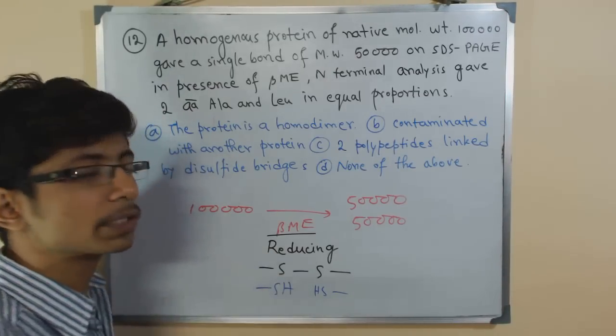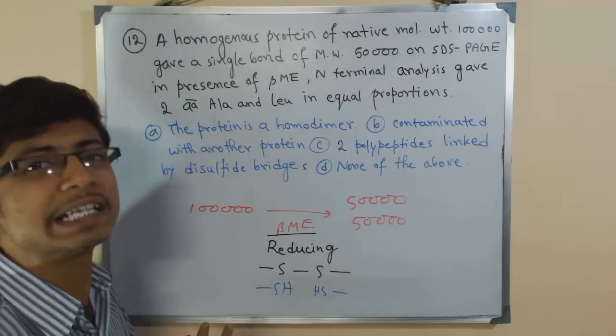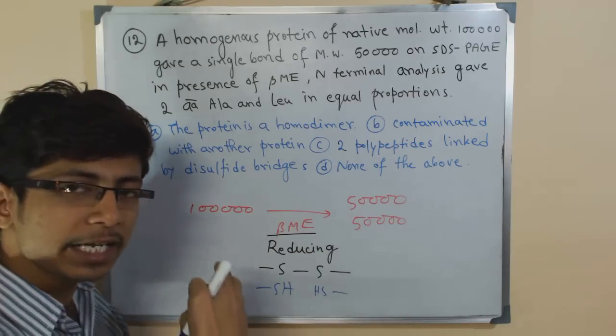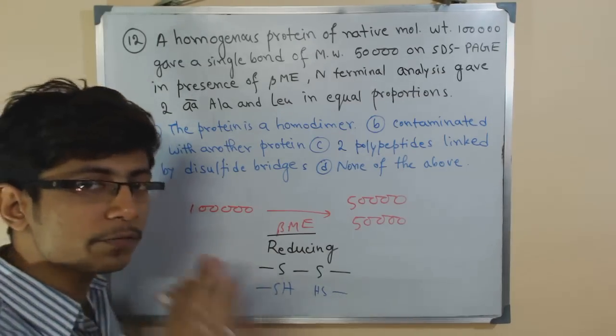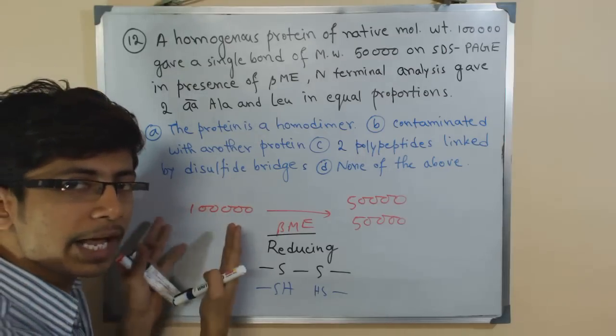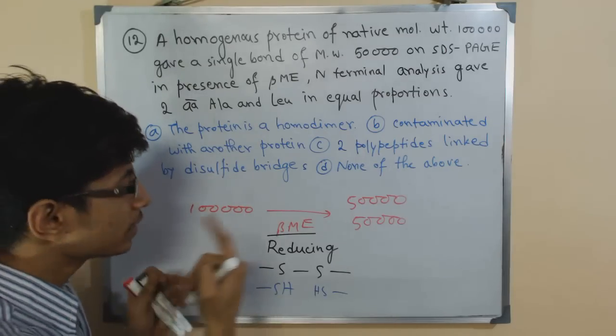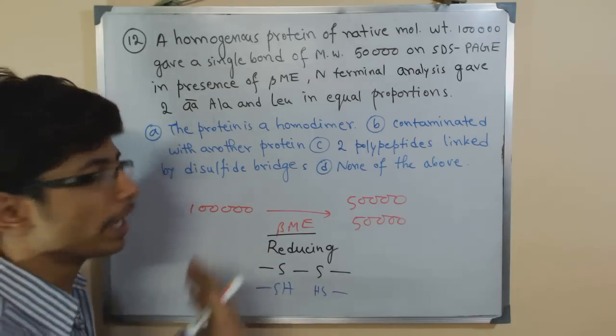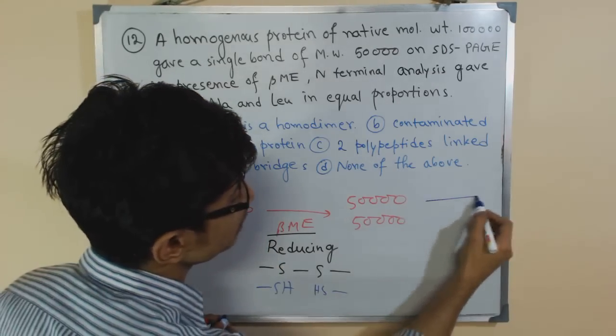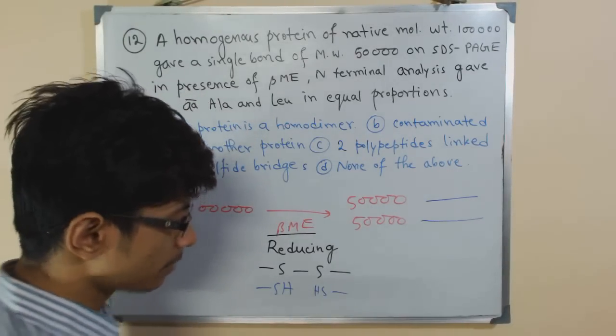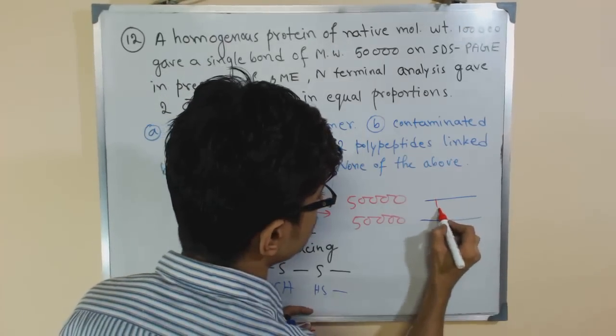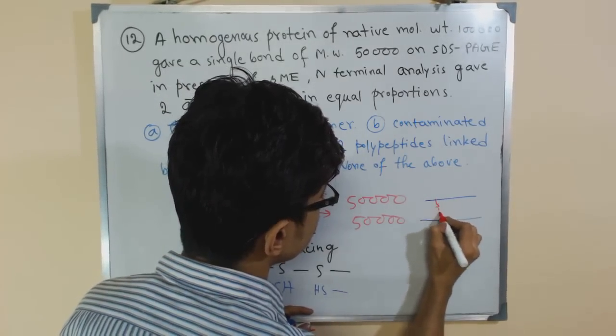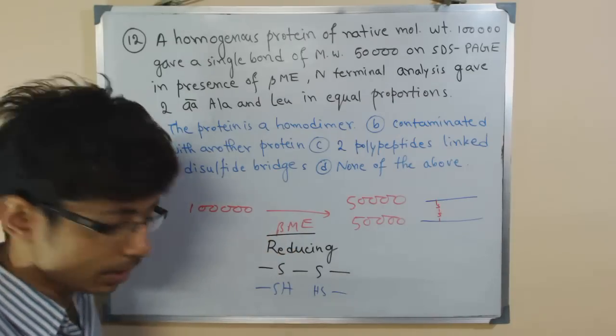So usually beta-mercaptoethanol breaks the protein structure from the disulfide linkage. In this case if we know that the mother protein has 1 lakh Dalton as a molecular weight, treating with BME will actually cut the disulfide bridge of that protein somewhere, releases two separate chains. These two chains are connected with disulfide bond or disulfide bridge and that bridge is broken by the treatment of beta-mercaptoethanol.